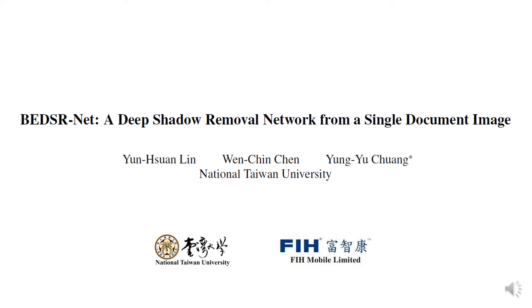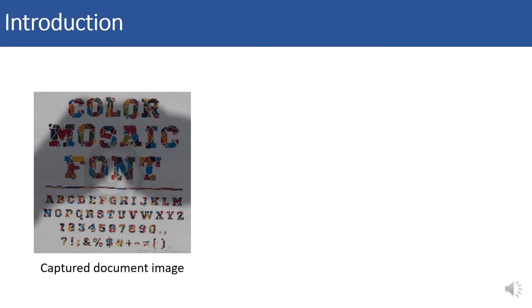Along with the improvement of phone cameras, people nowadays tend to use phone cameras to digitize documents. However, the captured images are often covered with shadows cast by occluders such as photographers.